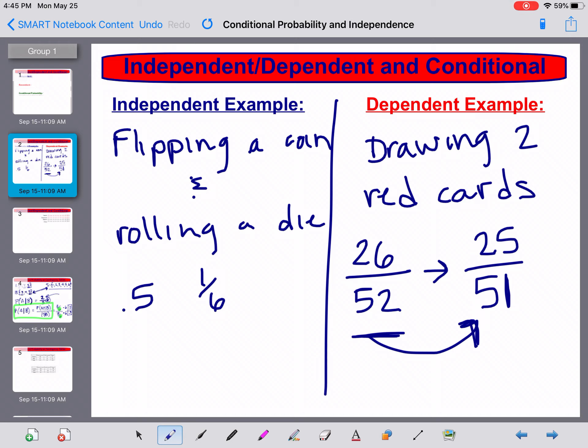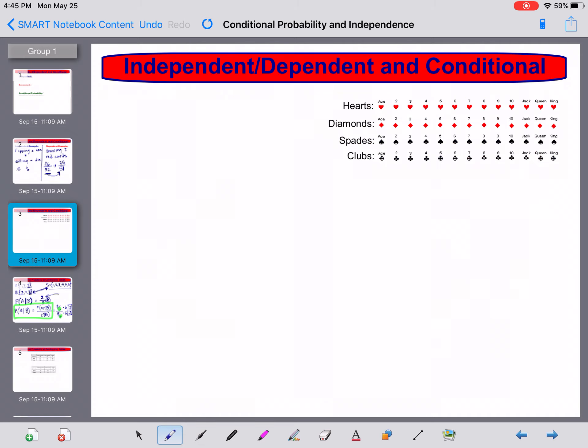But what if we didn't know or we weren't positive and we wanted to show it in a more mathematical way? Well we can do that. There's some equations that we can use to show independence. We can use intersections, meaning if I have the probability of A and B, if that equals the probability of A times the probability of B, I know those events are independent. If not, they're not independent.